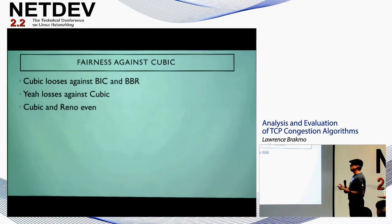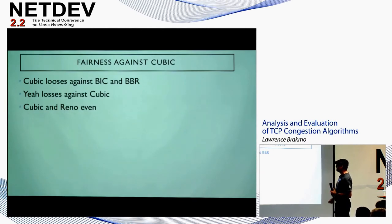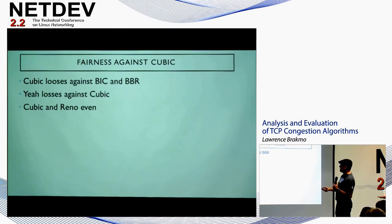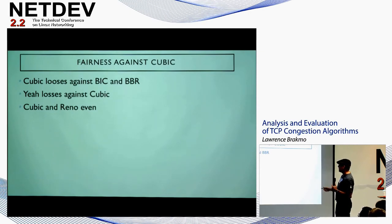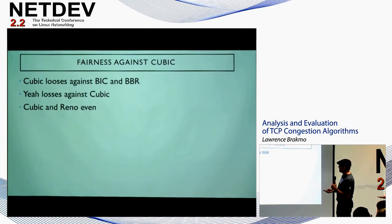Summarizing fairness: Cubic loses against BIC and BBR typically. NV loses against Cubic — it's totally suppressed. Cubic and Reno end up being even. BIC is much better than Cubic at 10 millisecond RTT, which is surprising. Something seems off with Cubic's behavior in these experiments.